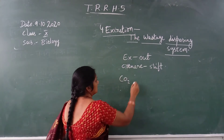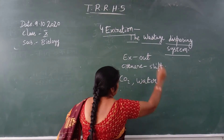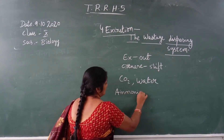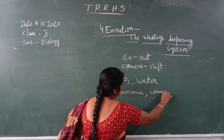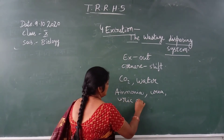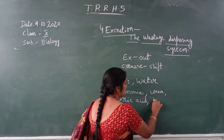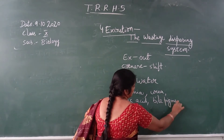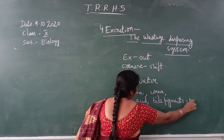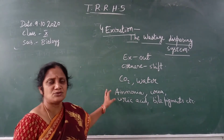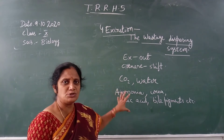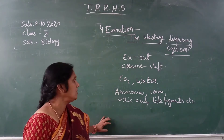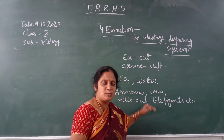These waste products include carbon dioxide, water, ammonia, urea, uric acid, bile pigments, and so on. Many different types of waste products are produced during metabolic activities. I'm going to explain what metabolism is. The waste material should be removed from our body.